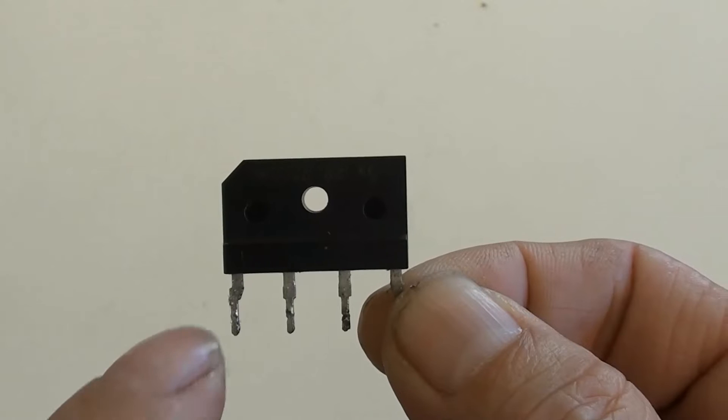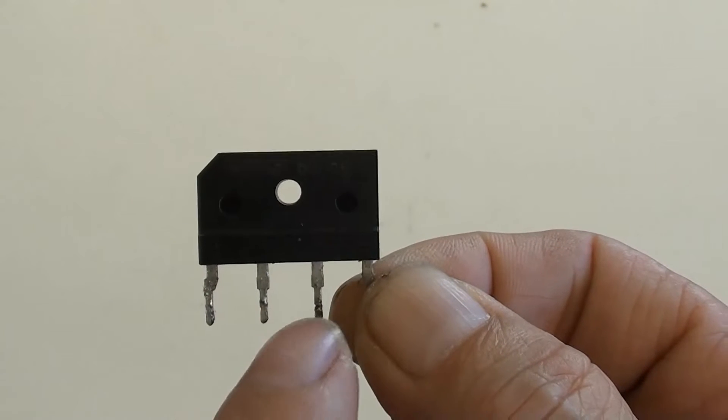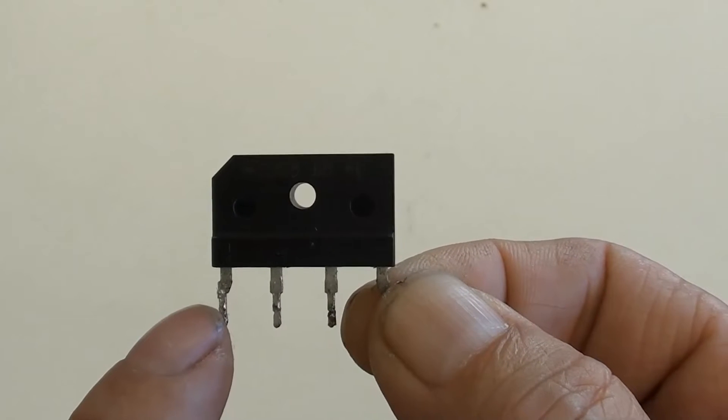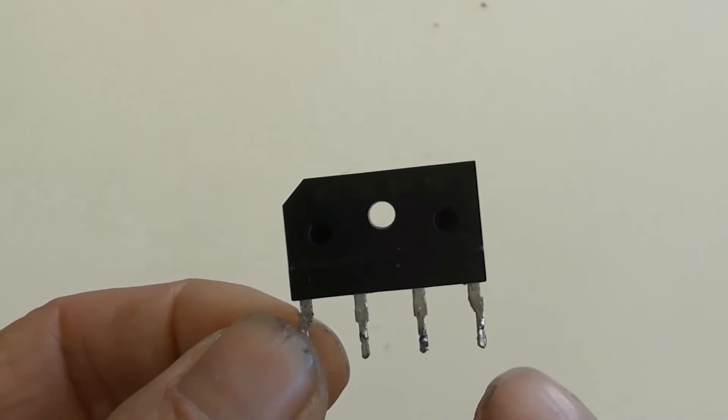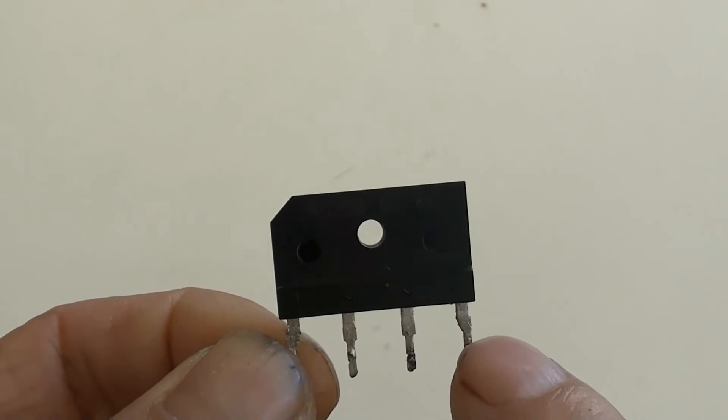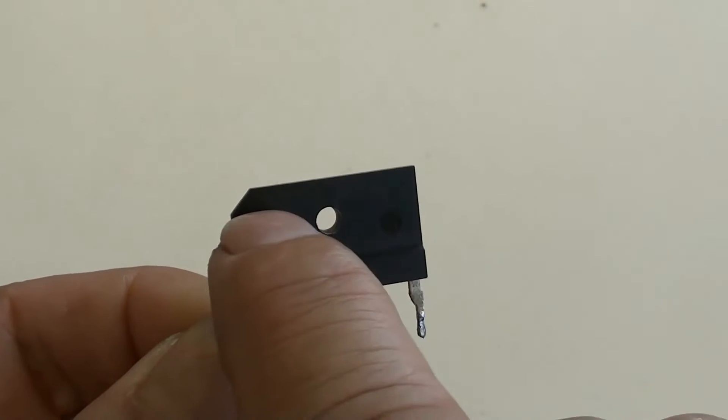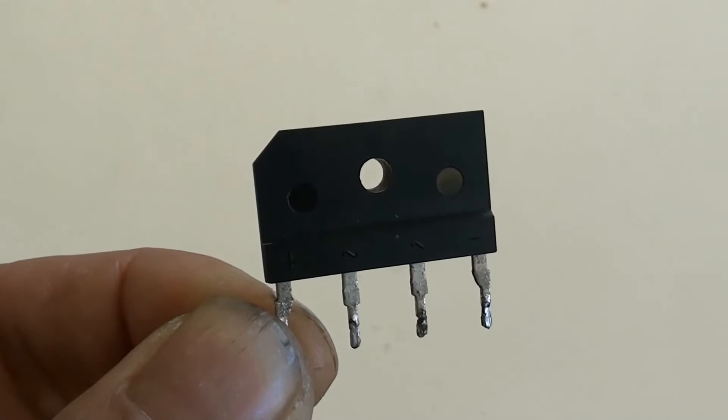There are markings here. In the middle, two terminals for AC. The left terminal with top corner cutoff is DC positive plus. The right terminal is DC negative dash. Also, this model number is printed here: D3SB60.